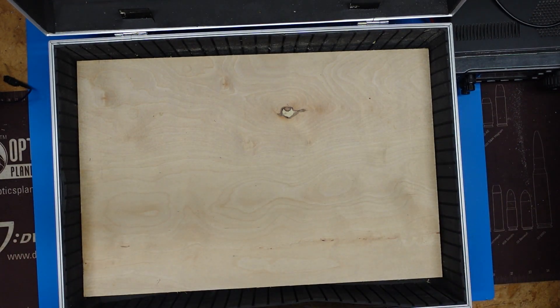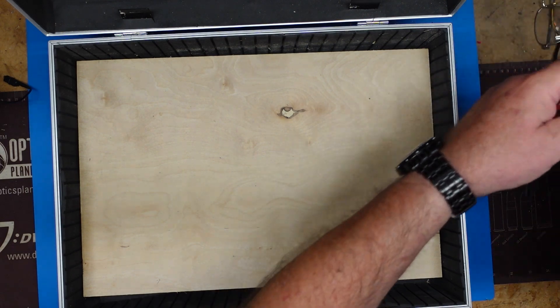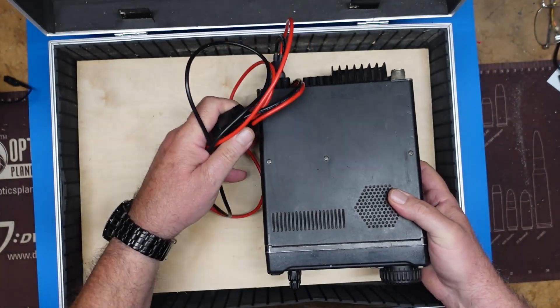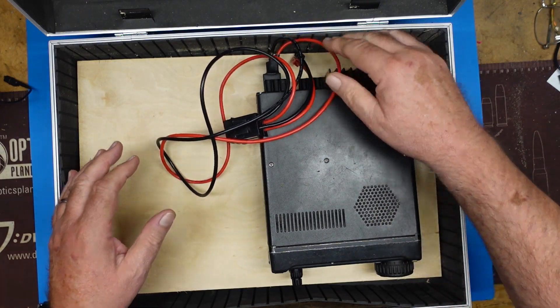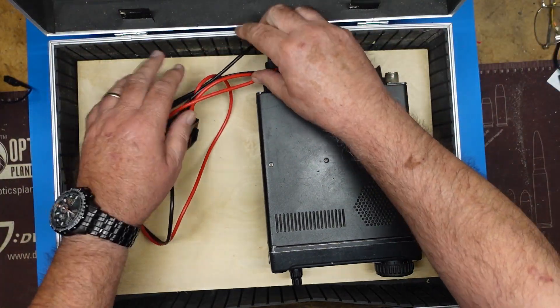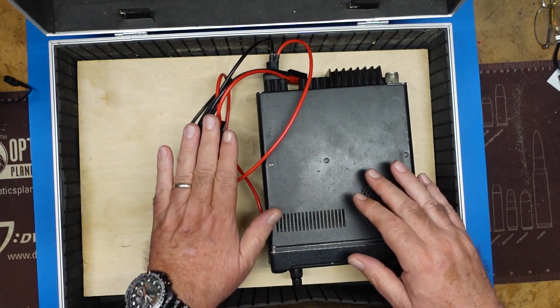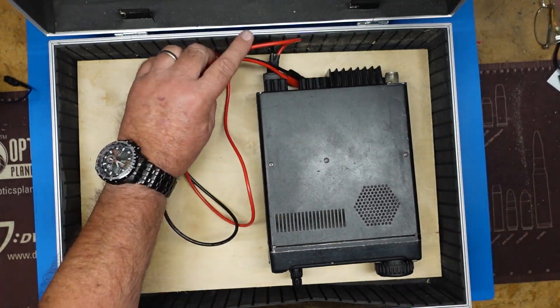But first, before I cut anything, I want to test fit this. Let's set our radio up here and see what it looks like. And the lid needs to be able to close as well. The tuner is shorter than the radio, so if the radio fits, we're good.